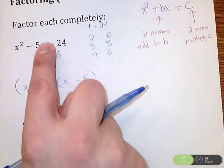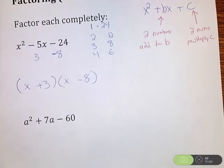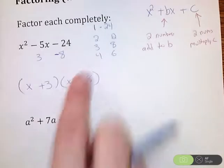So distributing would go this way. Factoring kind of undoes distributing. So it's almost like a division per se. So that's how factoring works.